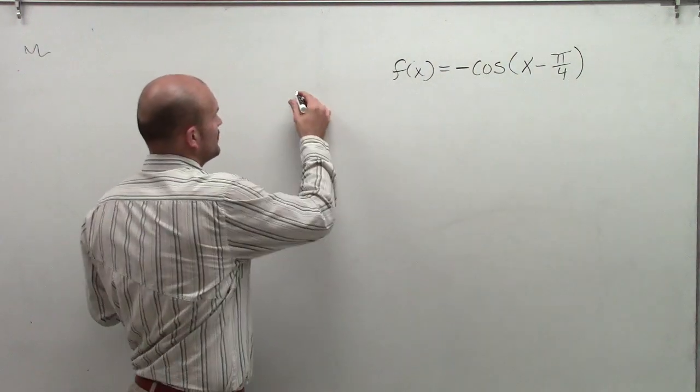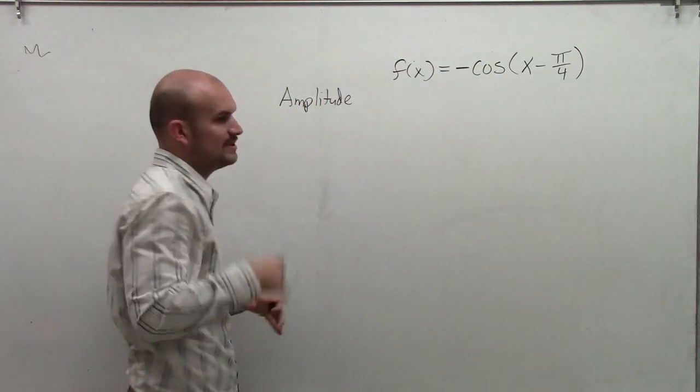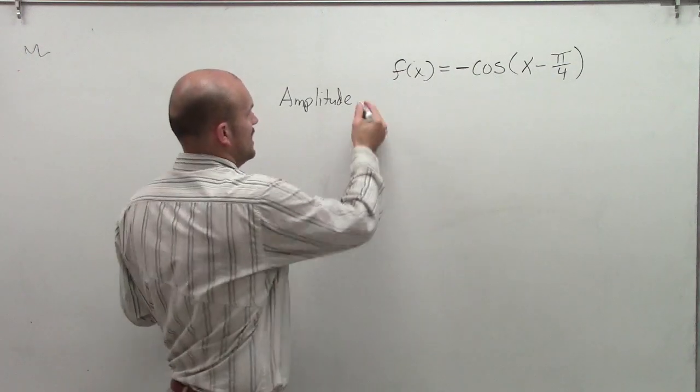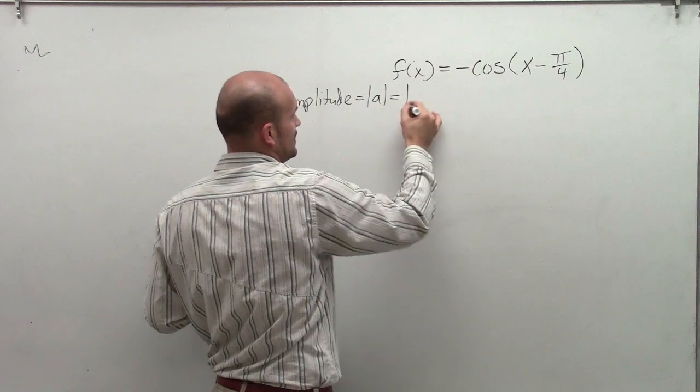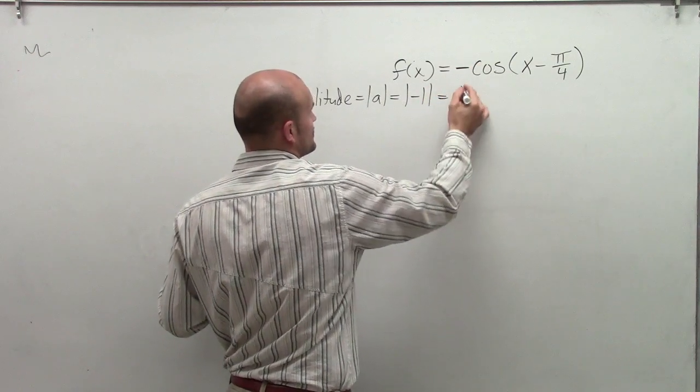So the first important thing we need to determine is our amplitude. And the amplitude, remember, is going to be the half distance between the maximum point on our graph and the minimum point vertically. So the amplitude represents the absolute value of a, which in this case, our a is negative 1. So the absolute value of negative 1 is 1.